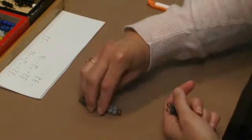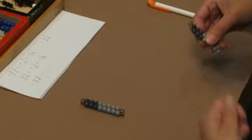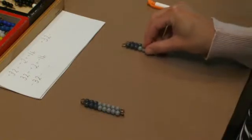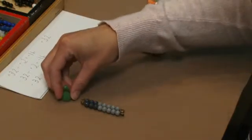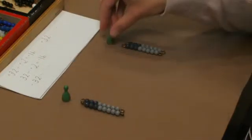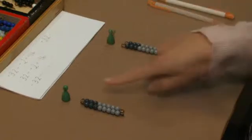So I have a group here of negative 16, and a group here of negative 16. And then they could bring in their Skittles to show that we can make two groups of negative 16.